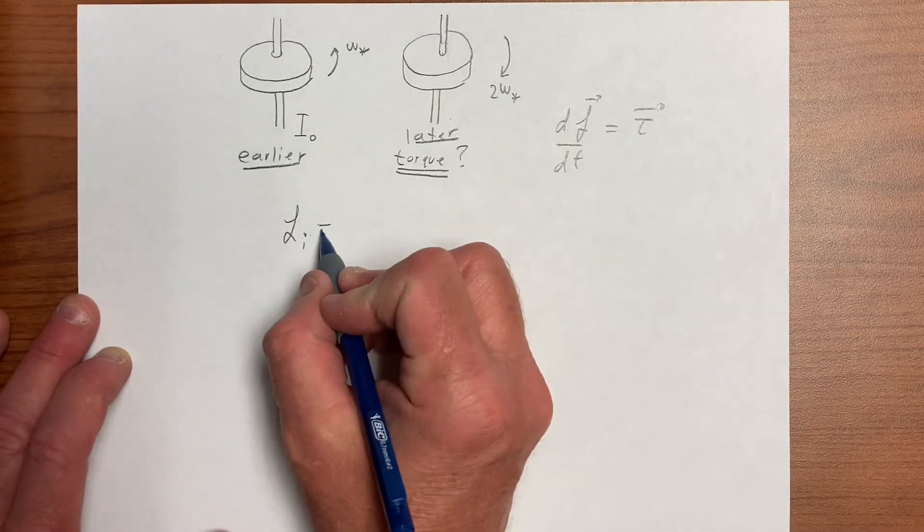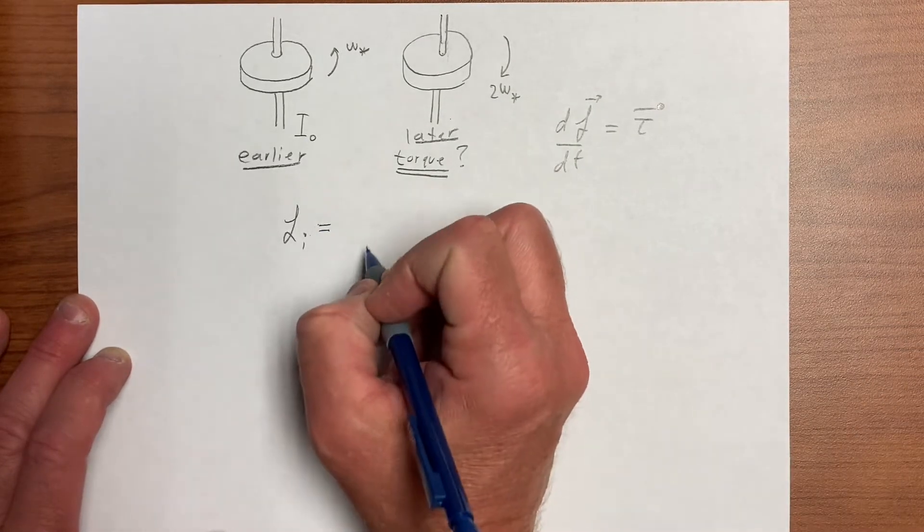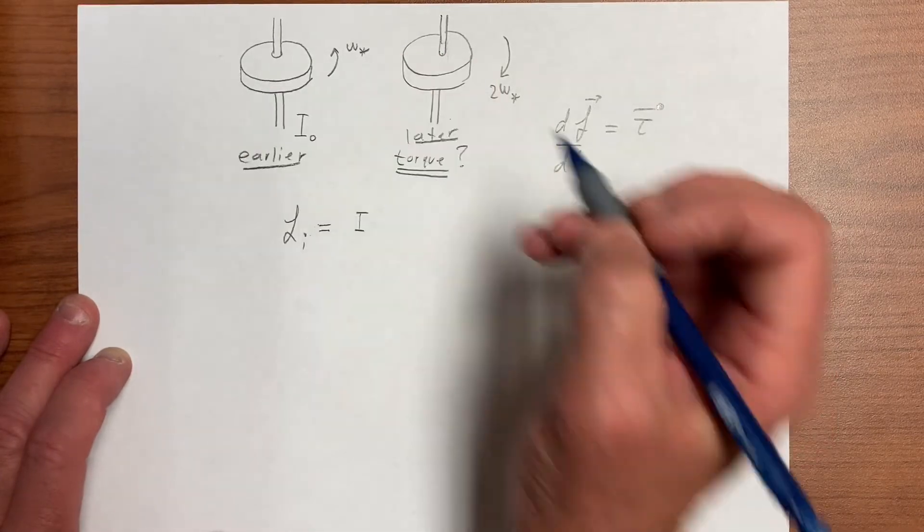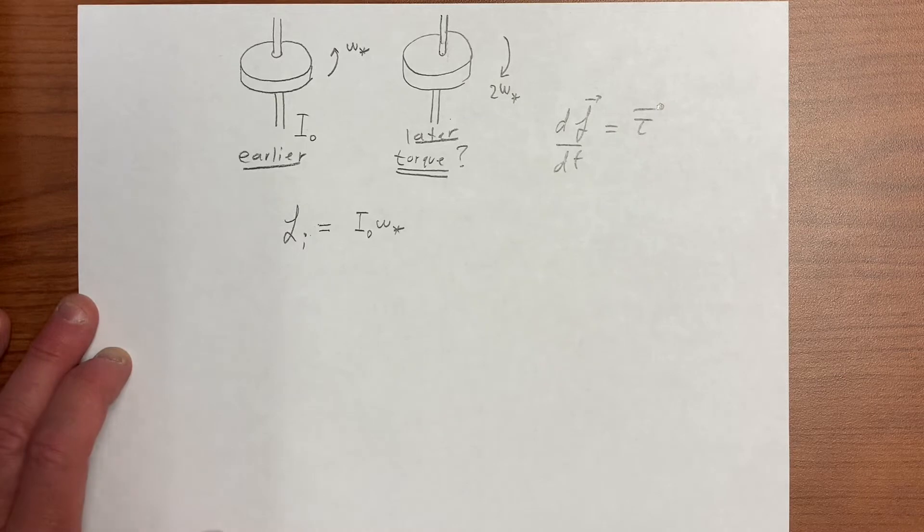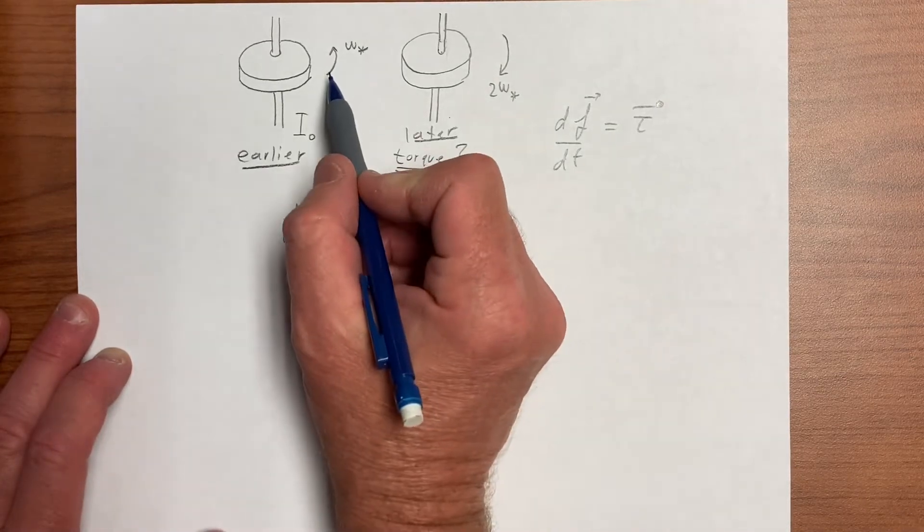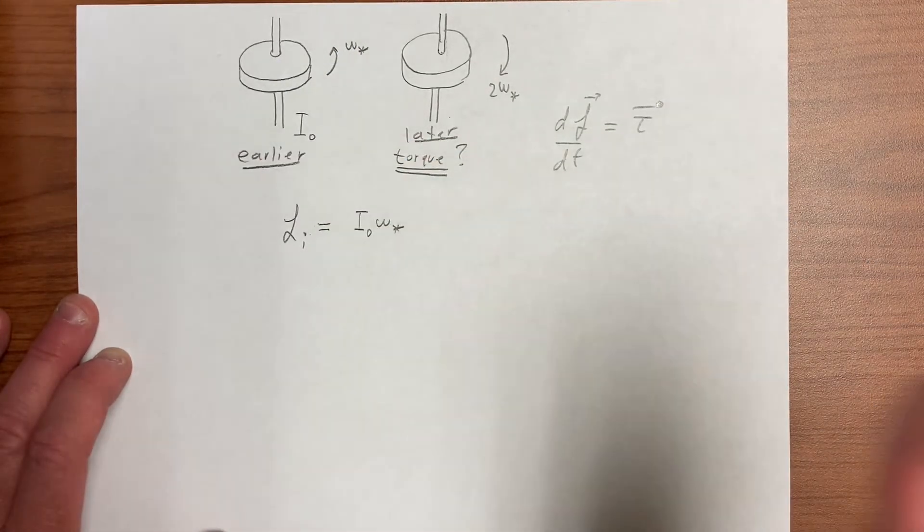So in the earlier configuration, we have an angular momentum about the center which is I naught omega star, and the counterclockwise configuration came in as positive.